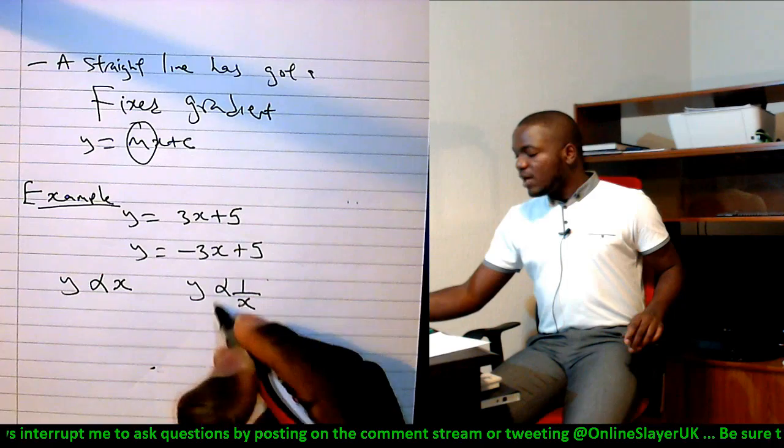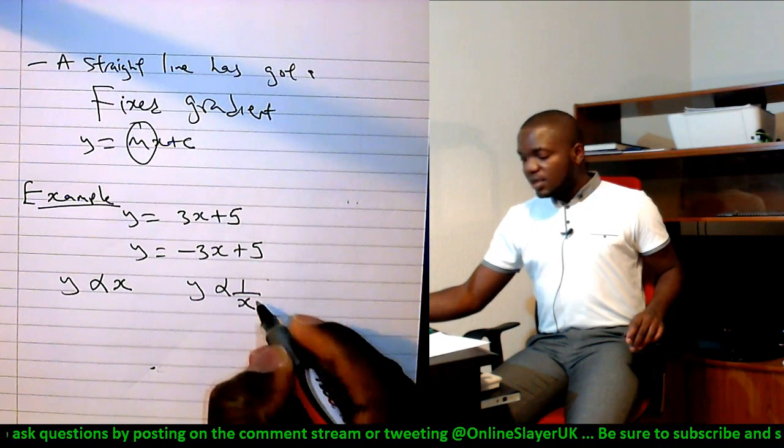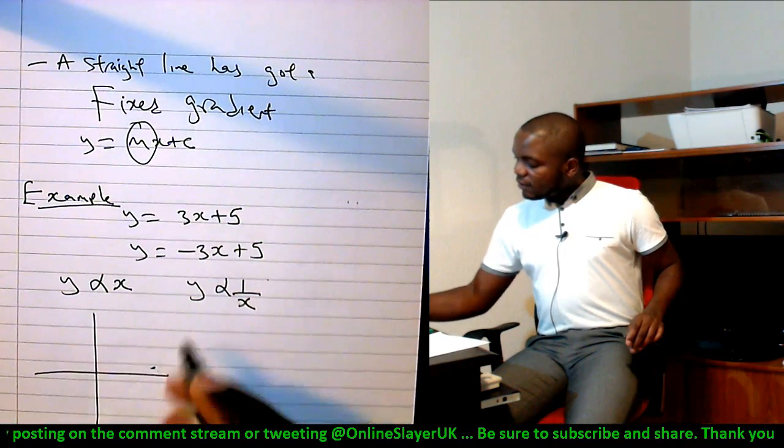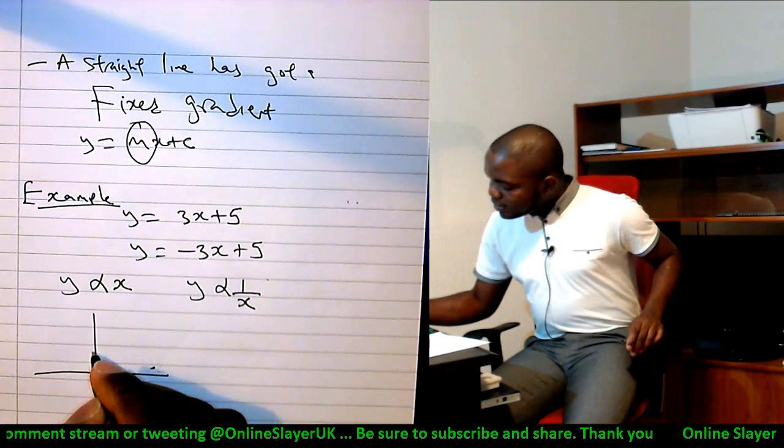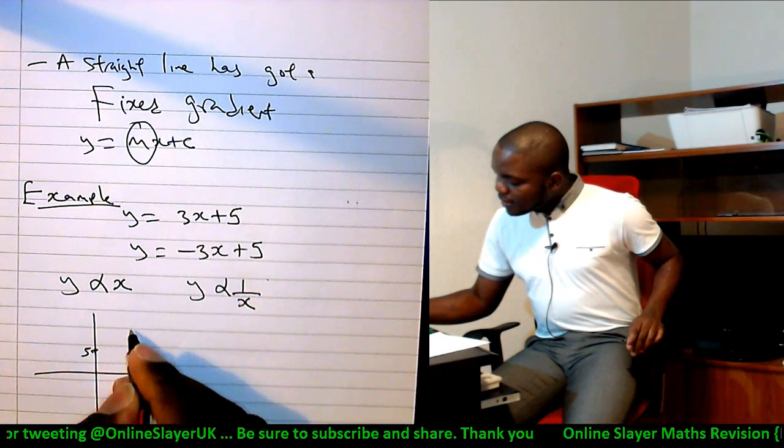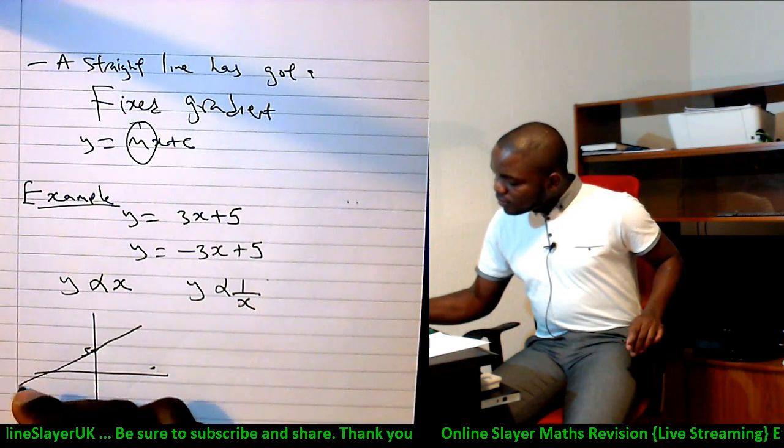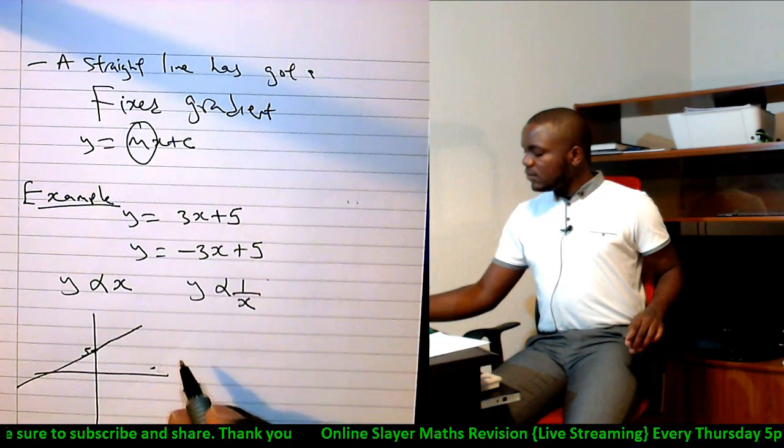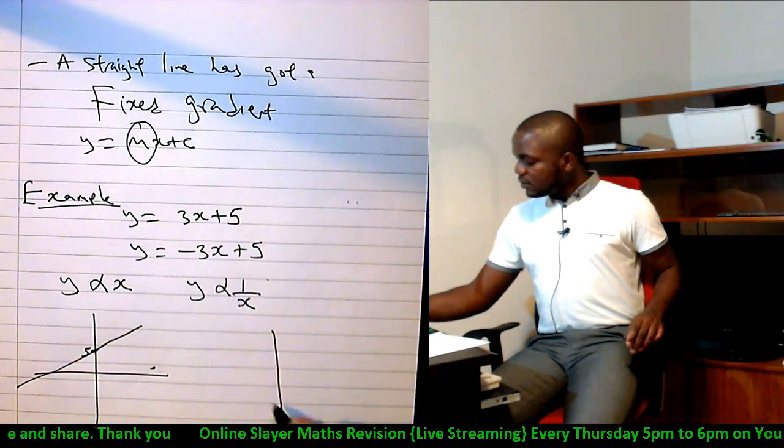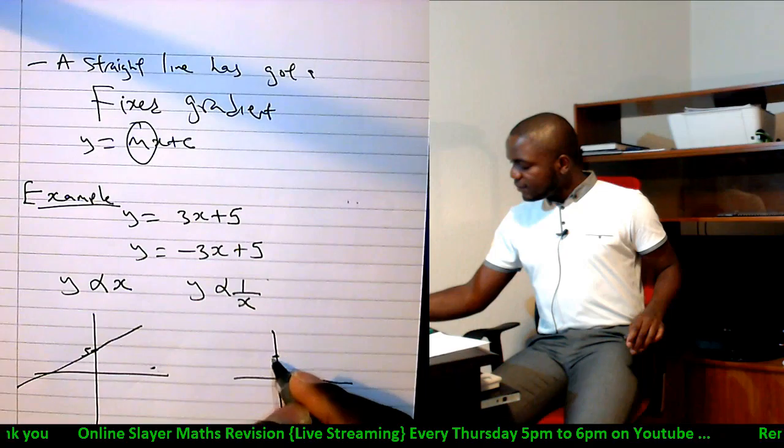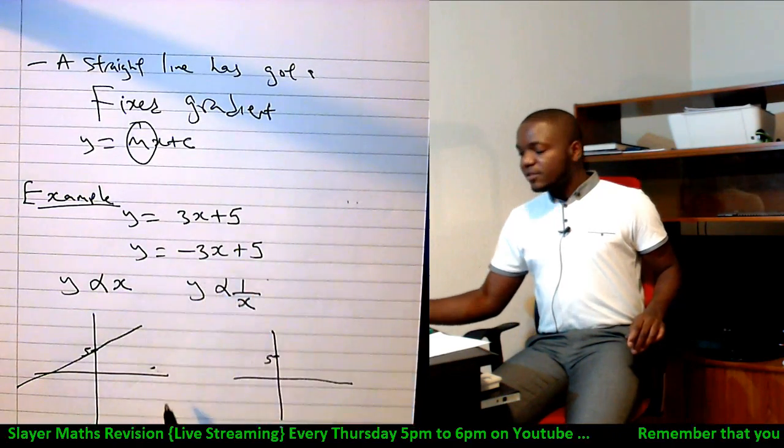For instance, the first graph passes through 5 and has a gradient of 3, so it will look like this. The second graph also passes through 5 but has a gradient of minus 3, so it's going to look this way.